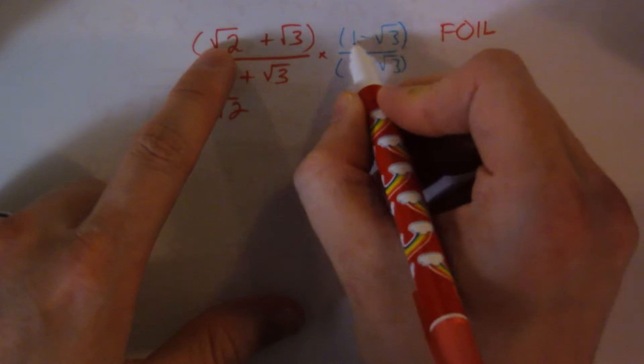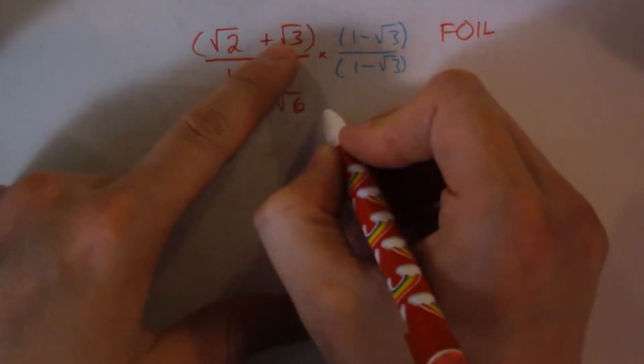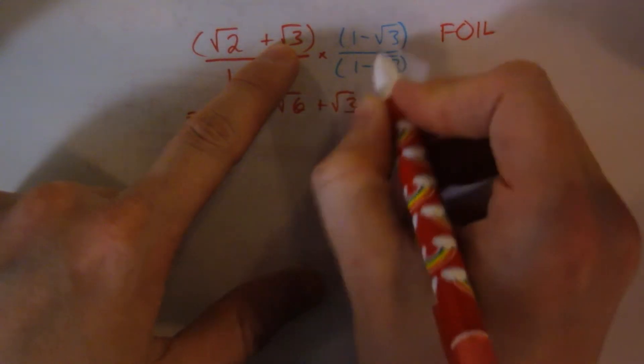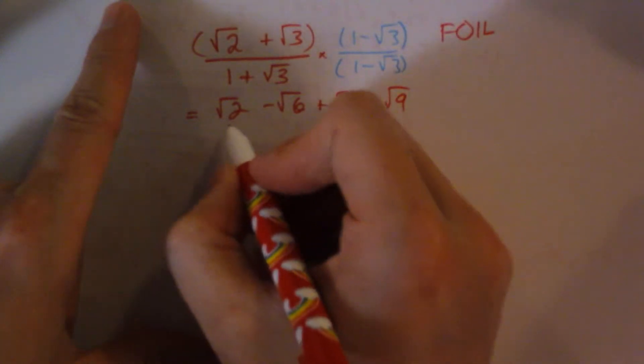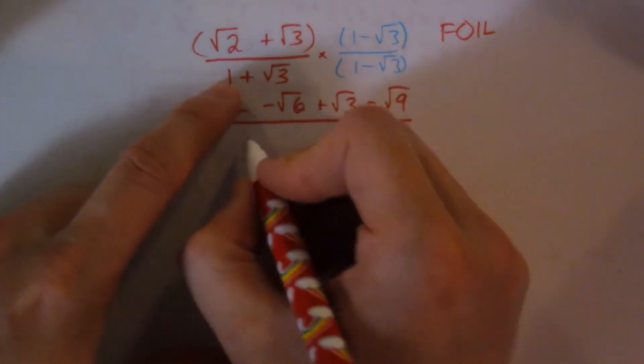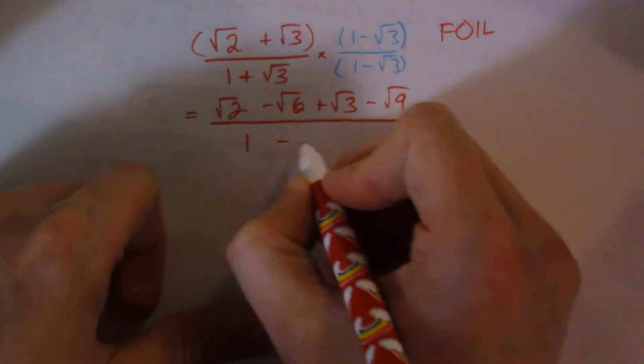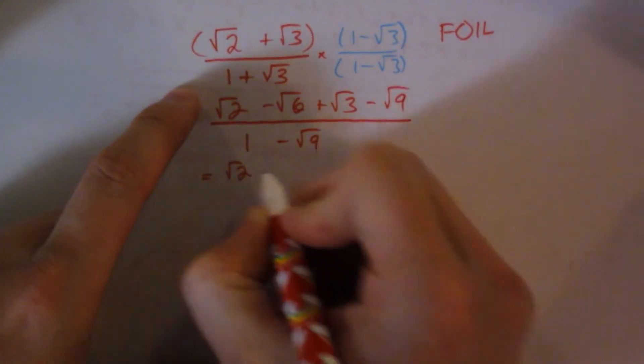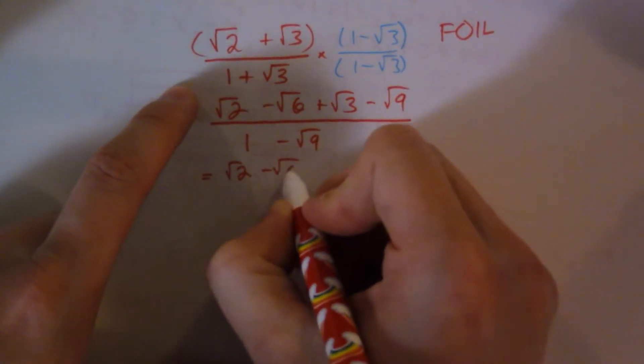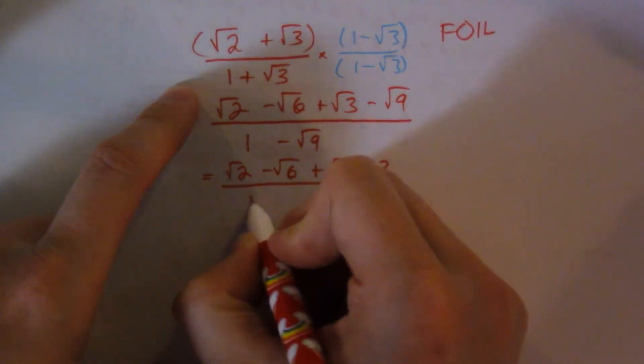So root 2 times 1 is root 2. So that's first. Outside is going to be minus root 6. Inside is going to be plus root 3. And the last one is going to be root 3 times minus root 3, which is minus root 9. Now the bottom we just have conjugates, so it's first and last. So 1 times 1, excuse me, root 3 times root 3 minus root 9.